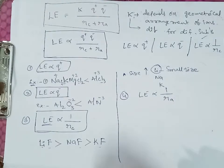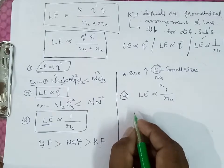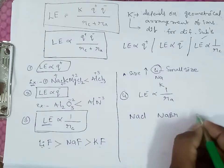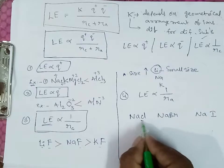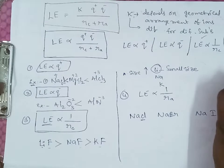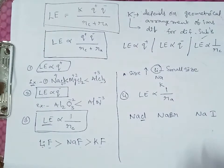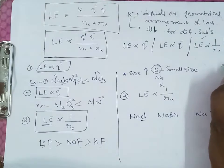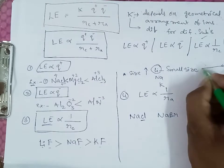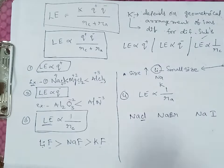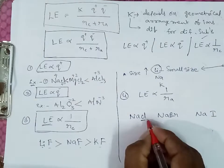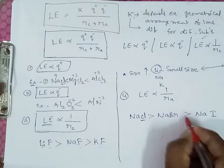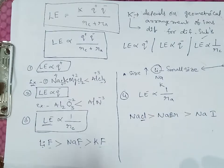Fourth, lattice energy is inversely proportional to the radius of the anion. For example, sodium chloride, sodium bromide, and sodium iodide share a common cation. In the halogen group, ionic size increases going down — chlorine has smaller size than bromine, and iodine has the largest size. Smaller anion size gives higher lattice energy, so the decreasing order is: NaCl > NaBr > NaI.